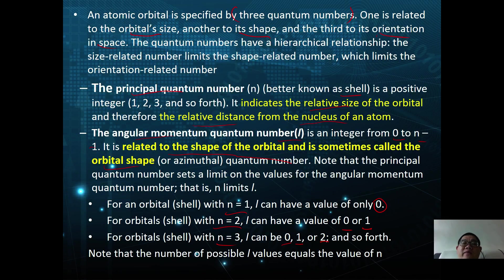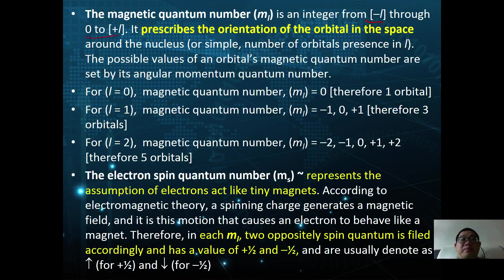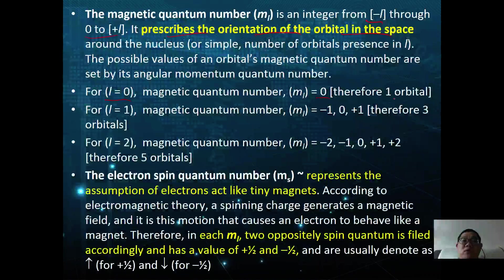The next number is the magnetic quantum number, ml, which is an integer from negative l through 0 to positive l. This prescribes the orientation of the orbitals in space around the nucleus, or in simple terms, the number of orbitals present in a given l. The possible values of ml are set by the angular momentum quantum number. For example, if l equals zero, ml is also zero, meaning it contains only one orbital.